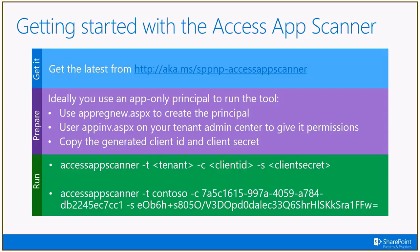The scanner is pretty straightforward to use. Essentially you go to aka.ms/sppnp-accessappscanner, which brings you to the GitHub site hosting the scanner where you can download it, find all the instructions on how to set up the scanner, and how to do the creation of the app-only principal. There are two big steps: preparing an app-only principal, and running the scan. We strongly advise using this approach because an app-only principal with tenant permissions has the right to read all your data, so we can find all the Access app sites in your tenant. If you use a regular account without proper permissions, you might miss certain Access apps and your scan results would not be complete.